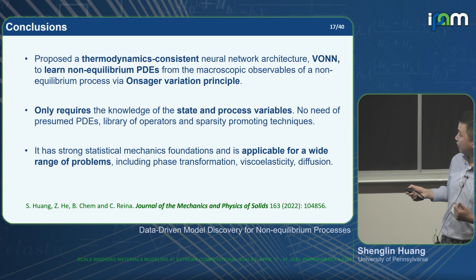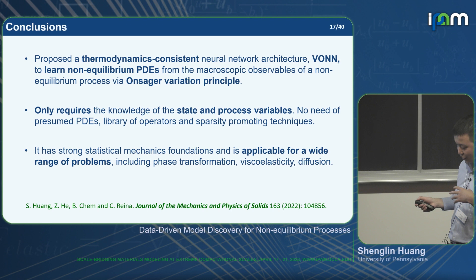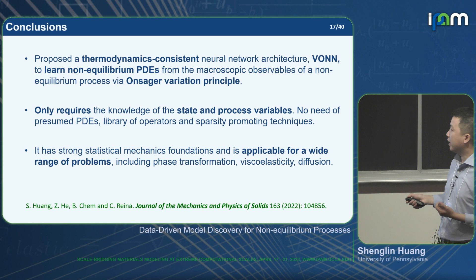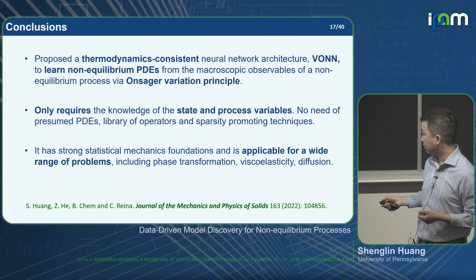For this first work, we propose thermodynamic-consistent neural network architectures to learn non-equilibrium PDEs from the variational principle without presuming the structure of the PDEs — we learn it from the variational principle. We only require knowledge of the state and process variables evolving in space and time. It has strong statistical mechanics foundations and can be applied to a wide range of problems, as shown by the three distinct examples. This work was published in JMPS last year.